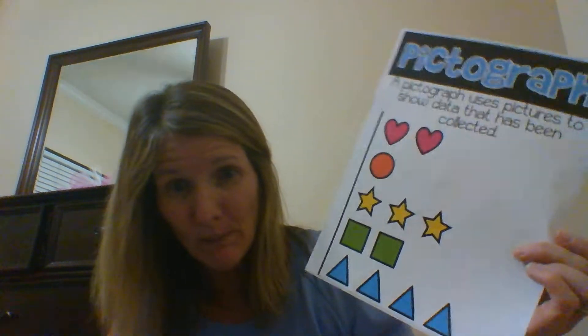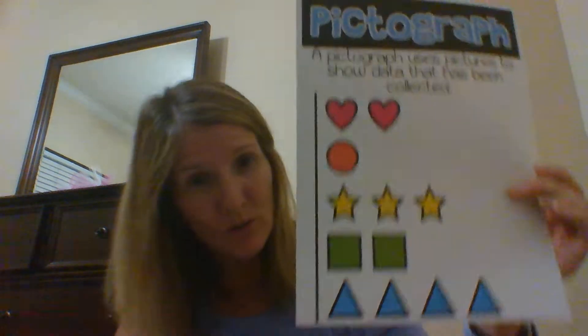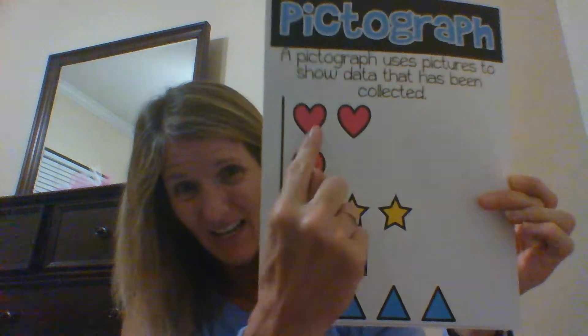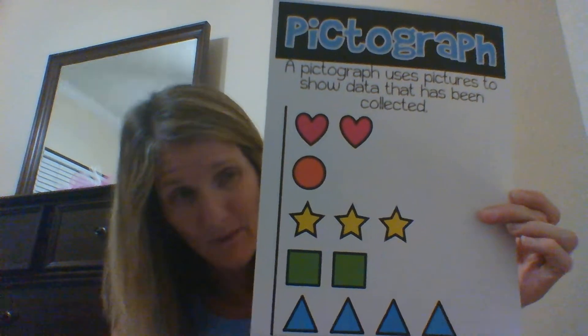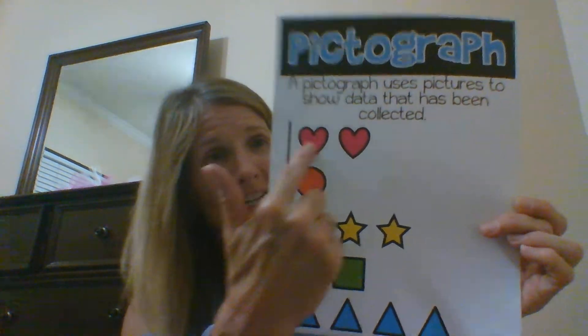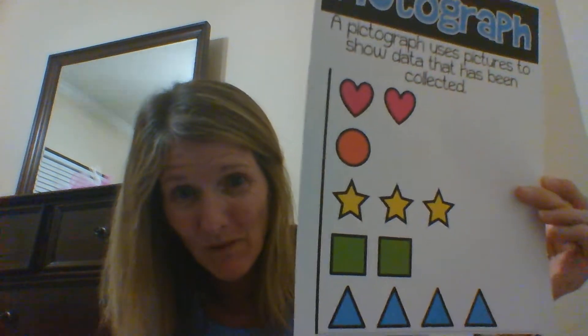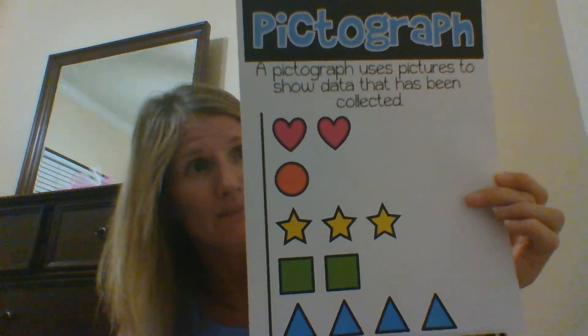A picture graph, or pictograph, uses pictures to show data that has been collected. Remember, data is just information. We took a survey — we asked people, what's your favorite shape? And every time they gave us an answer, that was data, that was information that we could use to show the results of our survey. So every single one of these shapes on our pictograph stands for some data, some information that somebody gave us.